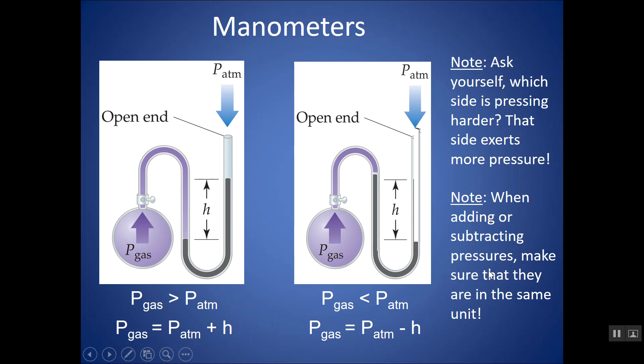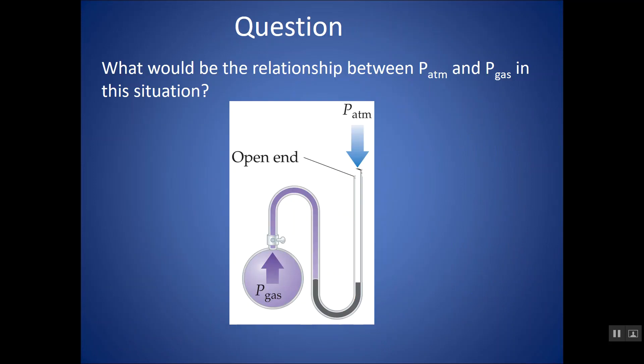When, just as a note, when you're adding or subtracting pressures, make sure that they're in the same unit. So if I'm subtracting the height in millimeters of mercury, the pressure of the atmosphere should be in millimeters of mercury. So if you don't have the same units, you're going to have to do a conversion first.